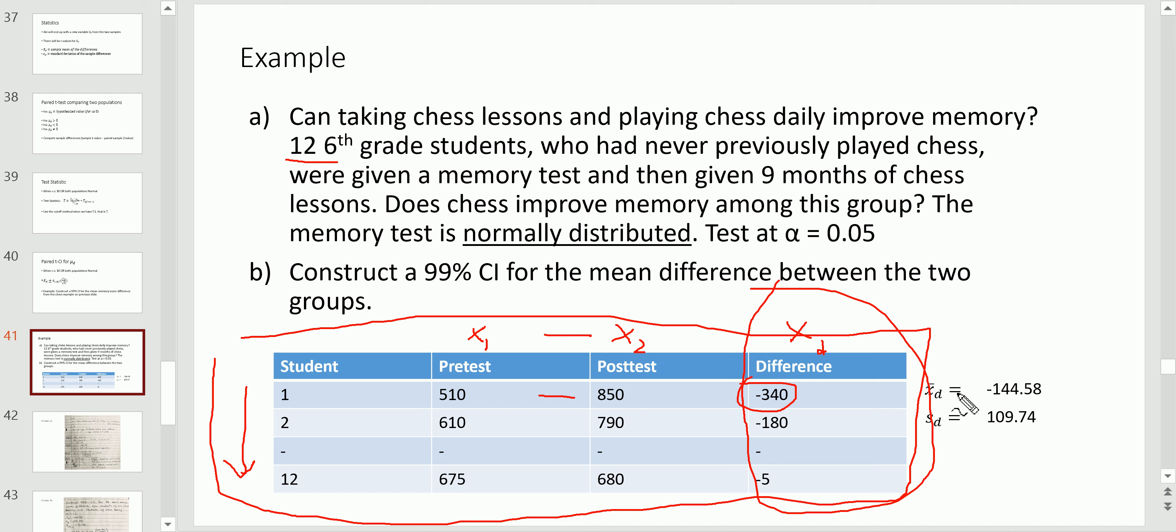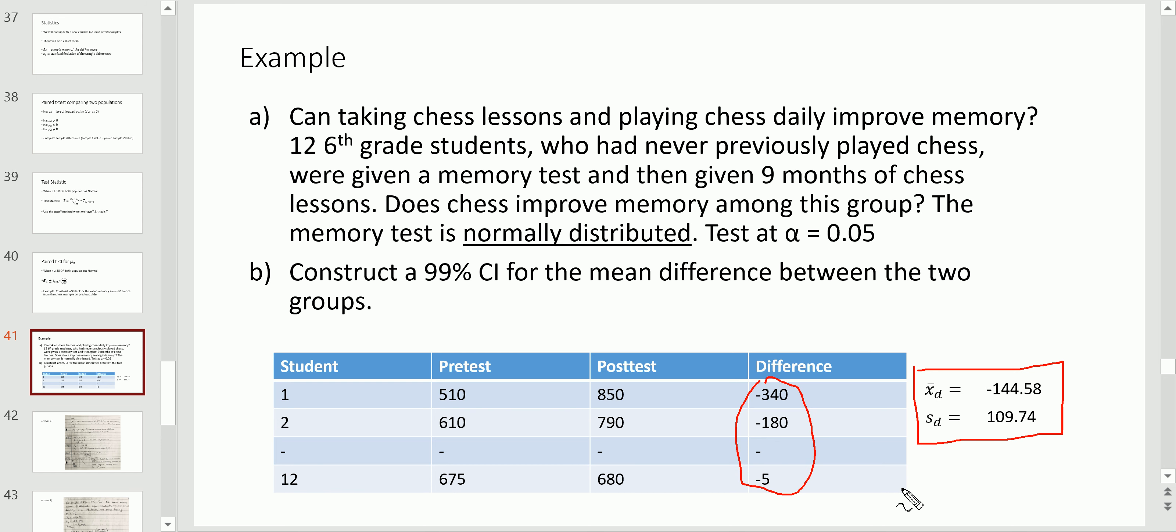The important numbers here are the summary statistics, which was the average and standard deviation of the difference. So we can essentially forget about these now and we can just focus on this. And you're also asked to make a confidence interval. So give this a shot. Pause.